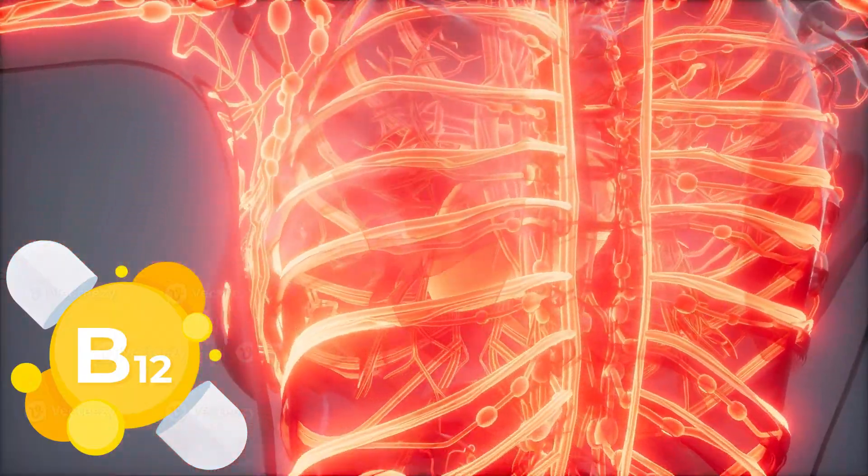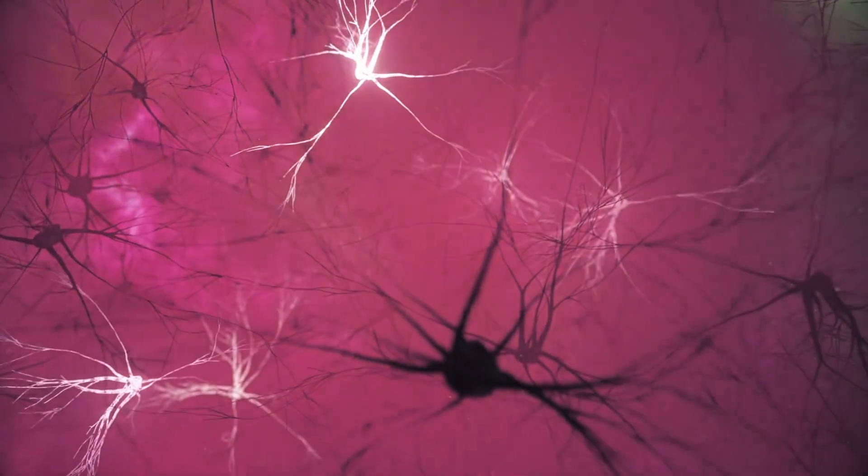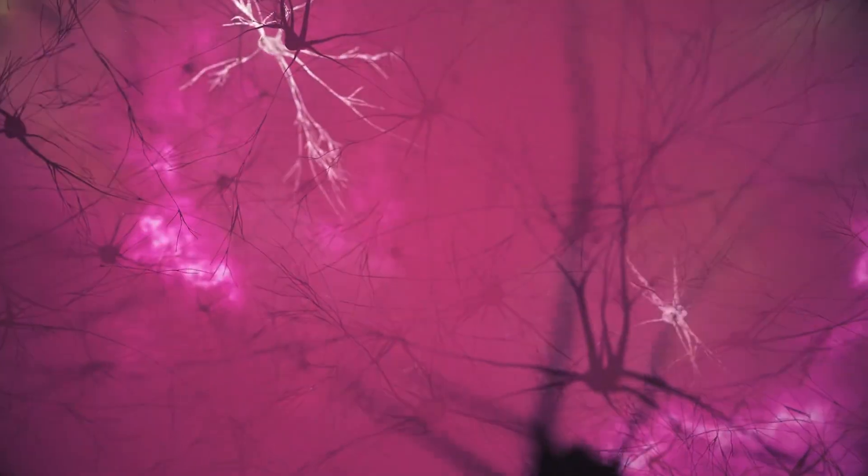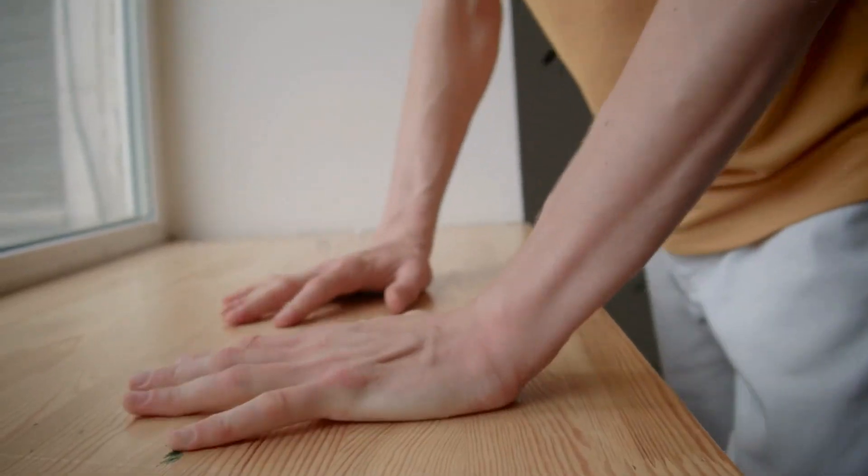Vitamin B12, also known as cobalamin, is your nervous system's top mechanic. It maintains the myelin sheath and ensures your neurons don't misfire or, worse, go silent. Low B12 levels can lead to serious nerve malfunctions like peripheral neuropathy, where your hands or feet feel numb,